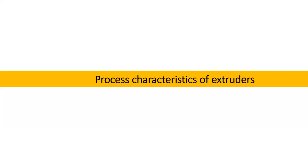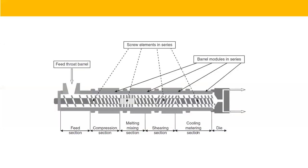Regarding the screw pitch, we have learned that in the conveying section, longer pitch is required. Then in the melting section, medium pitch is required, and in the metering section at the end, shorter pitch is required. So we have seen the first characteristics of the screw pitch.